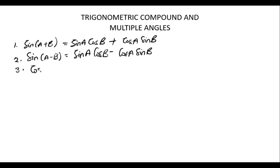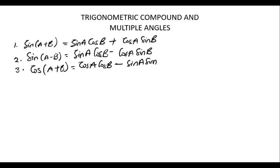The third one is cos(A + B). For cosine, the expansion is: cos A cos B minus sin A sin B. Note that for cosine, unlike sine, the sign between the terms is the inverse — so where sine has plus, cosine has minus.